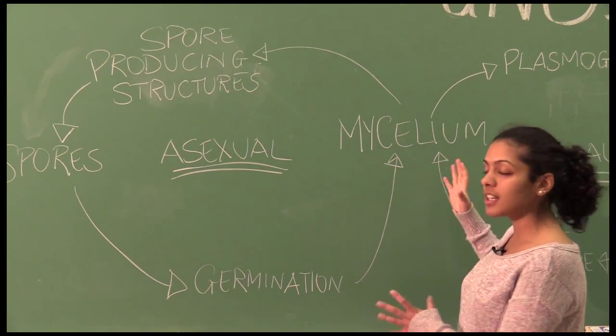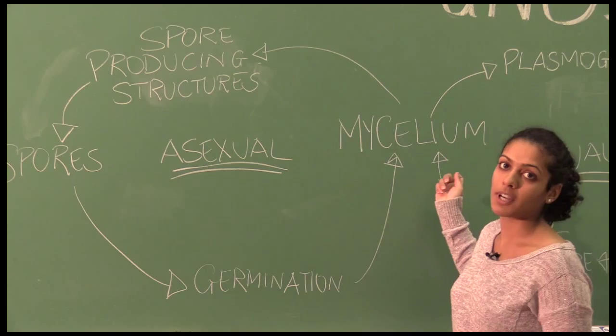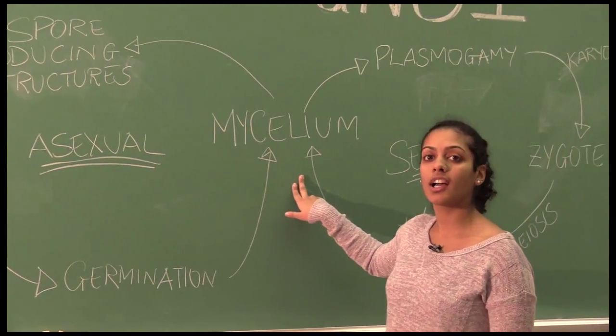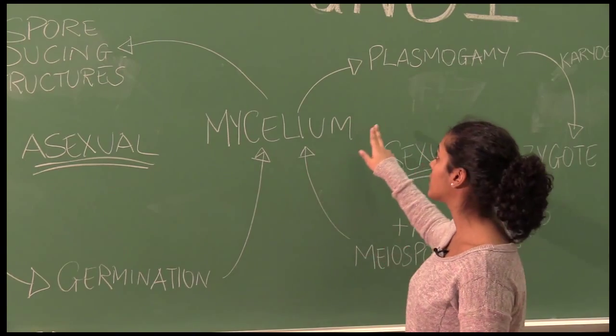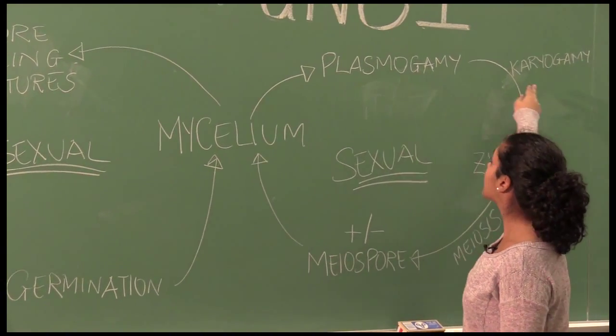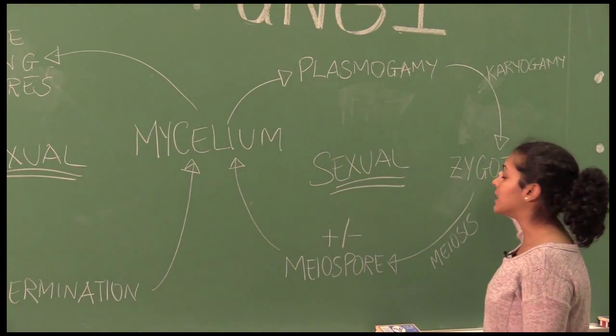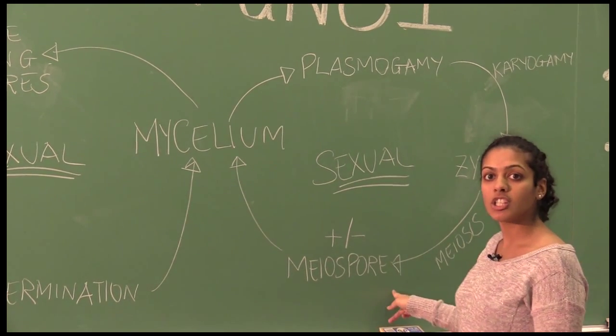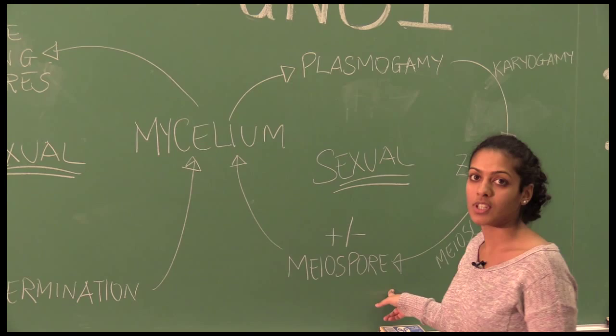But under certain conditions, they may choose sexual reproduction. And that happens when two different strains of fungi, or two different nuclei, fuse during plasmogamy and cariogamy to form a diploid zygote. The zygote, then under certain conditions, will again produce another fruiting body.